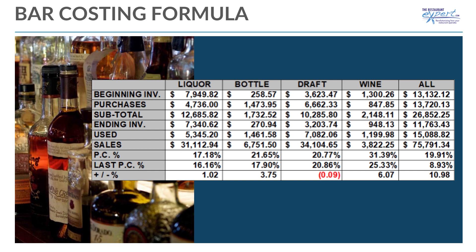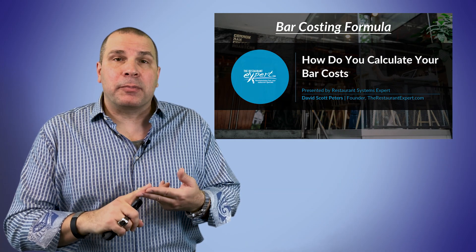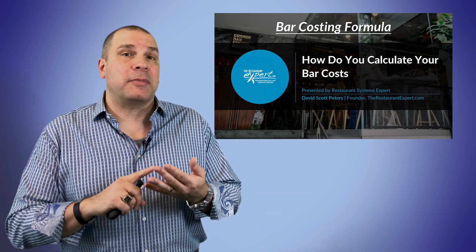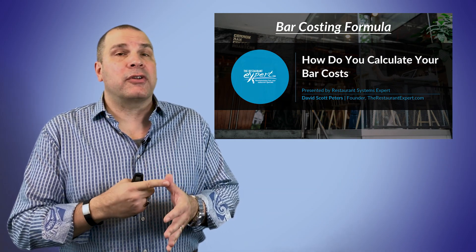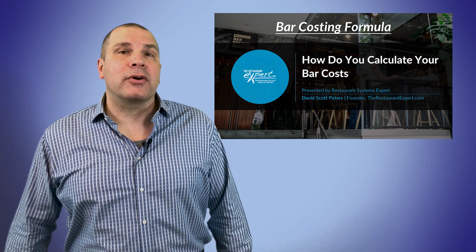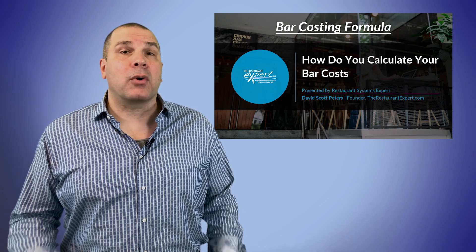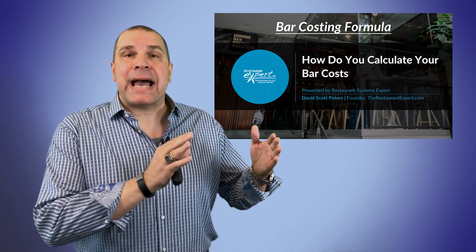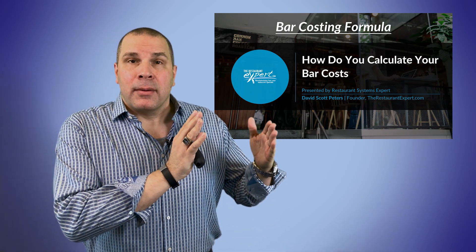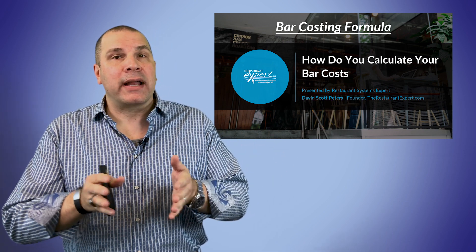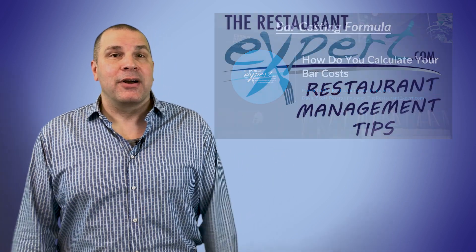That's it. That's all it is. Beginning inventory plus purchases minus ending inventory gives me use. Use divided by sales — you now know your pour cost or bar cost by category: bottle beer, draft beer, wine, liquor.